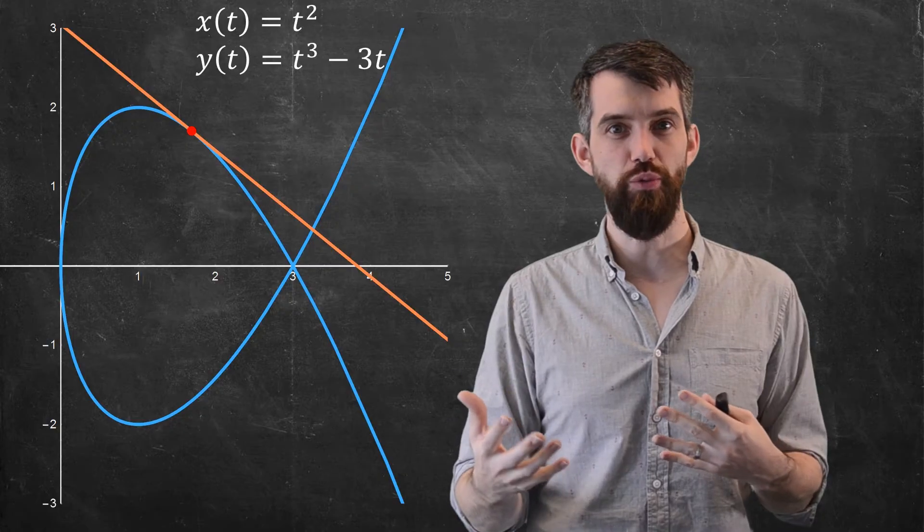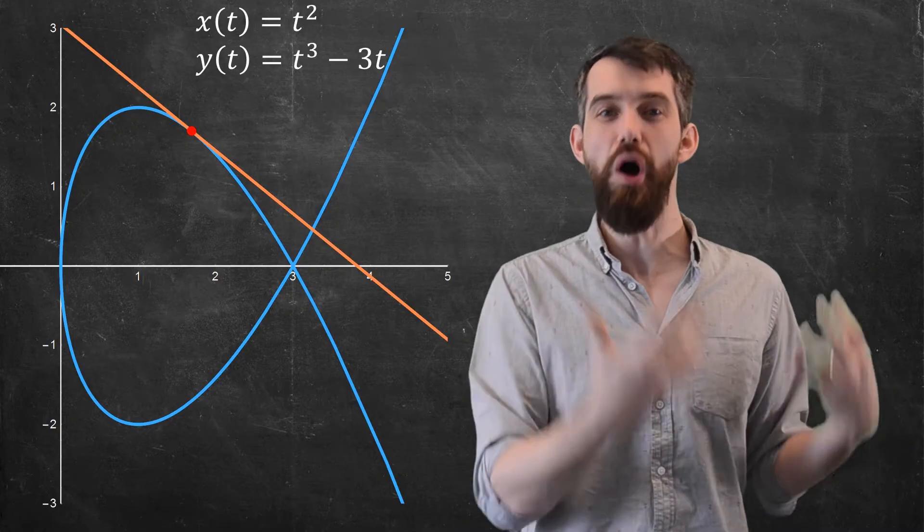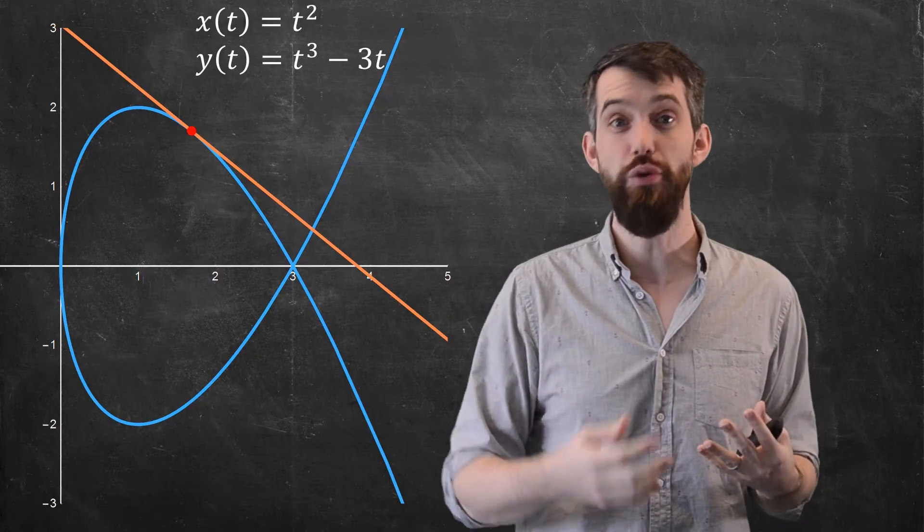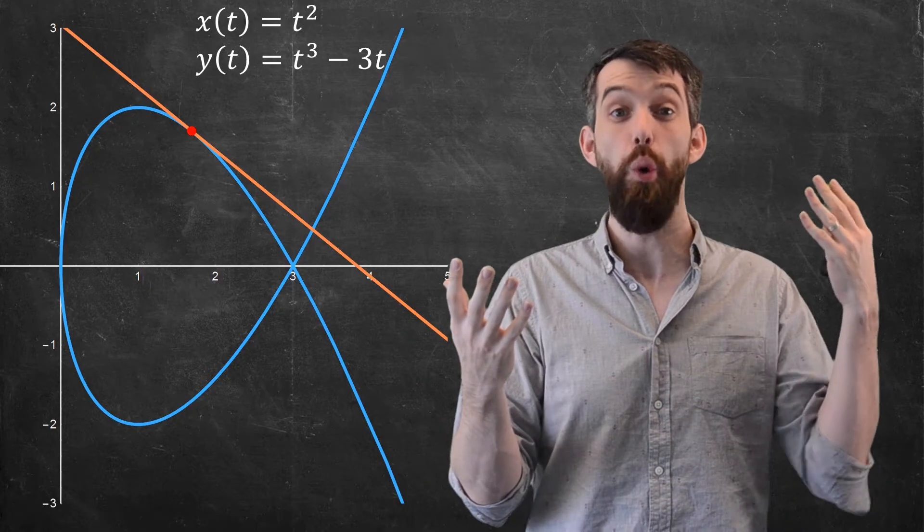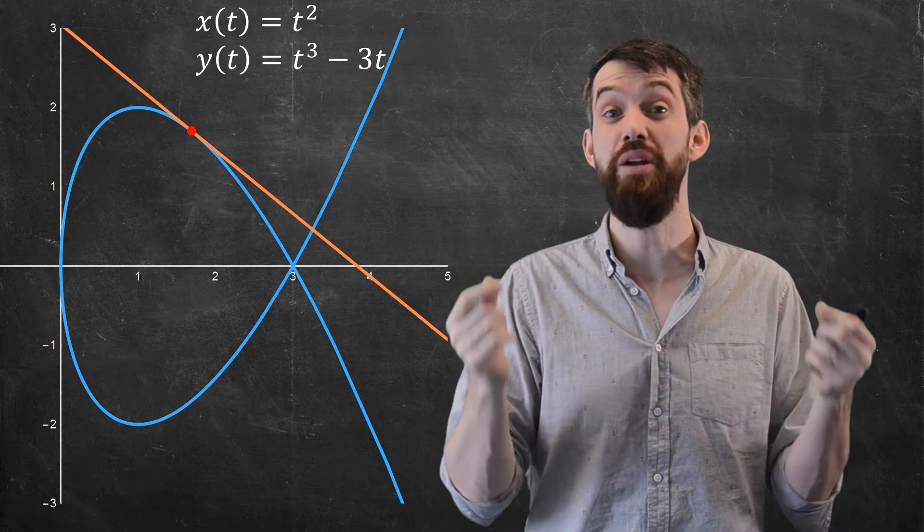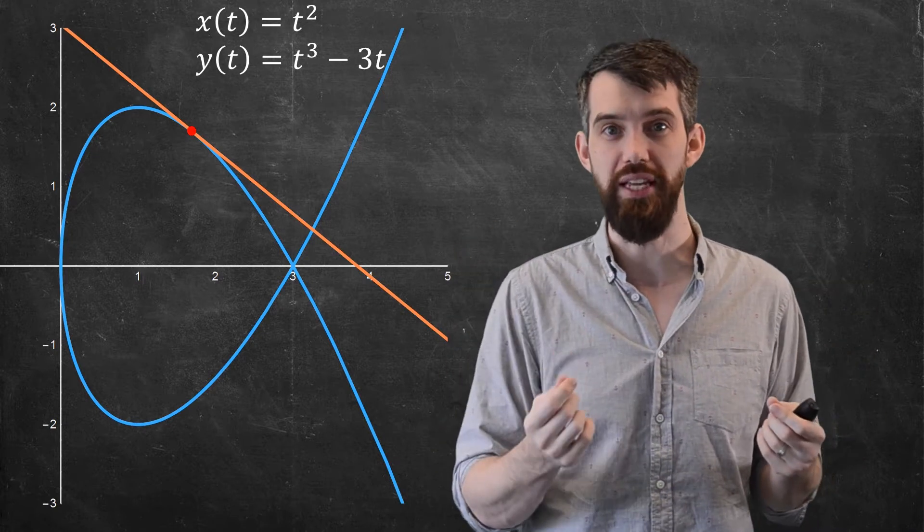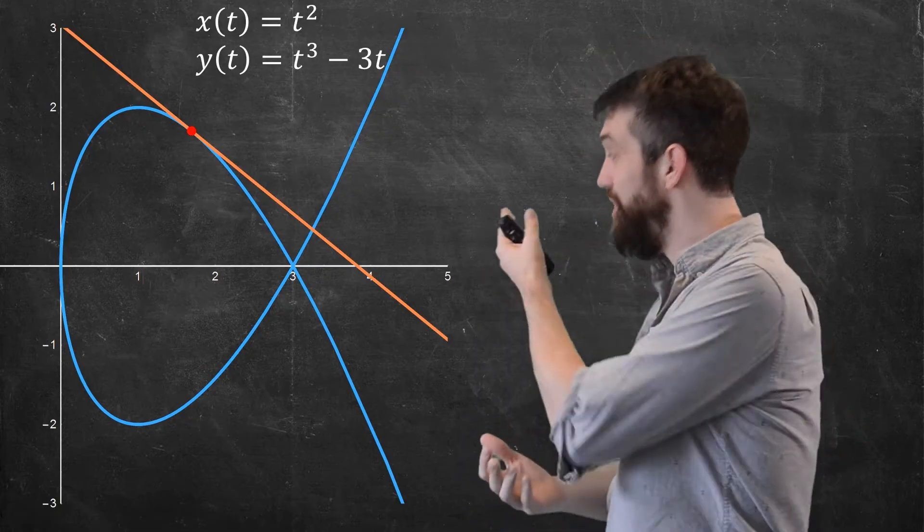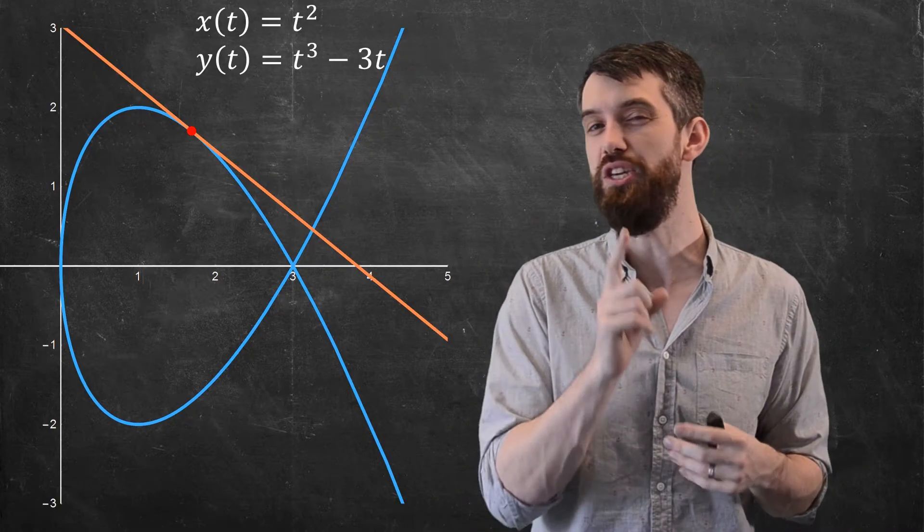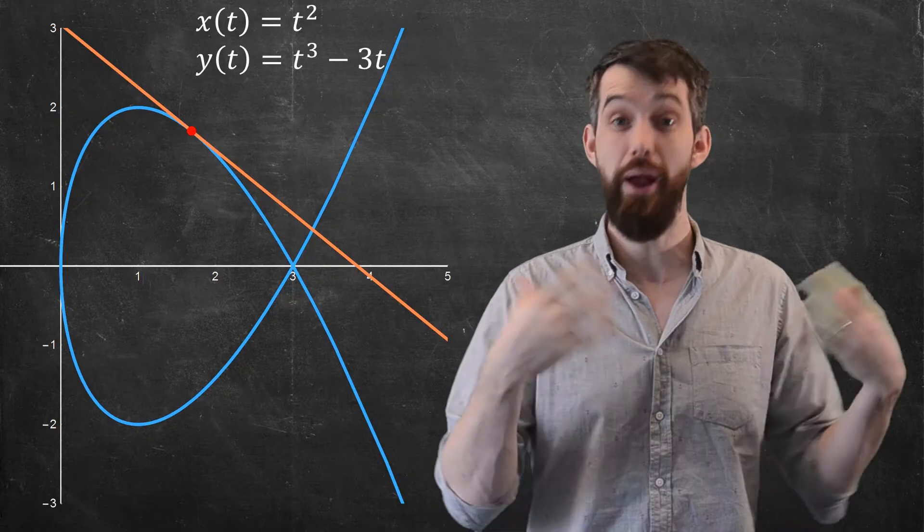But now what we want to do is repeat a lot of that, but in the context of a parametric curve. So instead of y as a function of x, you have x as a function of t and y a function of t, that both of the coordinates are functions of an independent parameter we'd normally call t. So for example, in this particular graph, we've got x(t) = t² and y(t) = t³ - 3t, so this is a parametric curve.